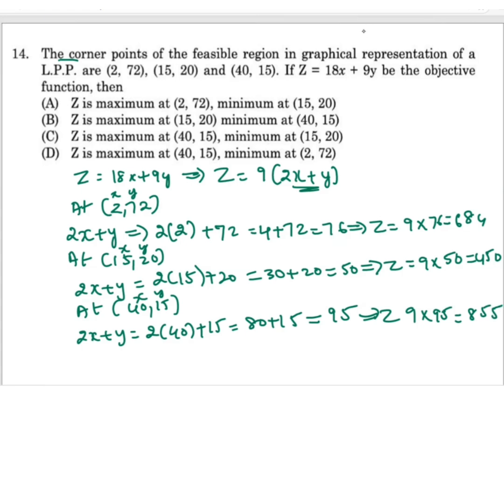So you can see from here which is the minimum and which is maximum. We can see here maximum point is 855 at the point (40,15) and minimum is 450 when it is (15,20).